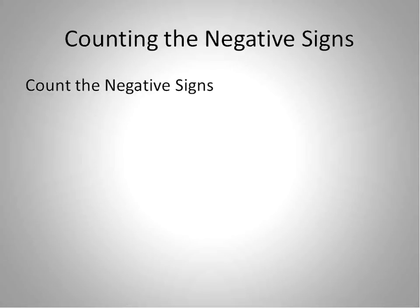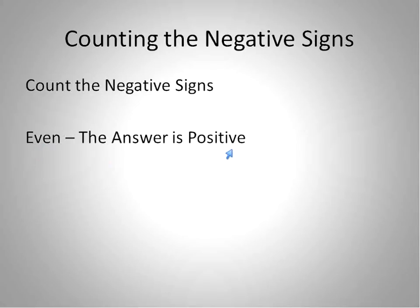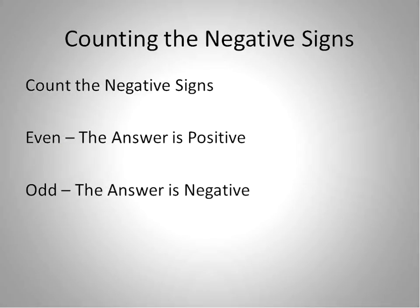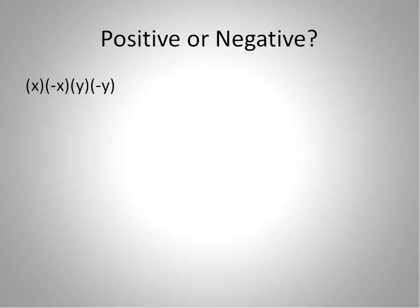There is an easier and more accurate way — here's the shortcut: just count the negative signs. If the count is even, the answer is positive. If it's odd, the answer is negative. So if you have two negatives, that's even — the answer is positive. If you have one negative, that's odd — so your answer is negative. Now we'll apply this to questions with more than two numbers being multiplied.